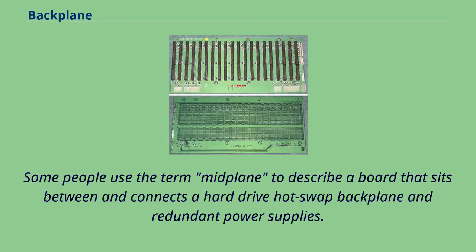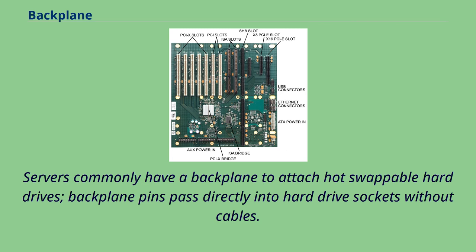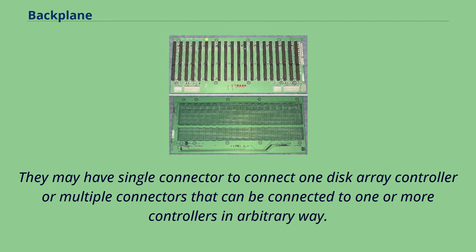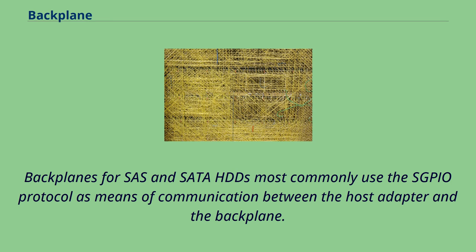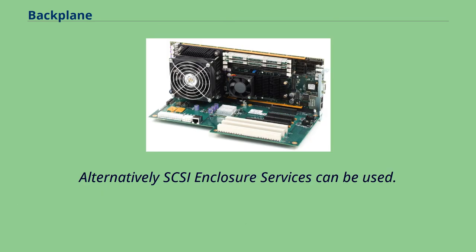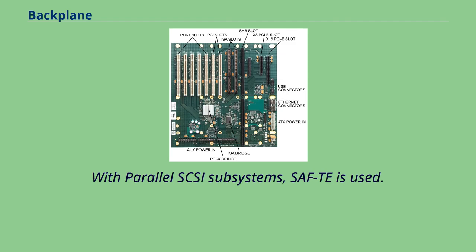Some people use the term midplane to describe a board that sits between and connects a hard drive hot-swap backplane and redundant power supplies. Servers commonly have a backplane to attach hot-swappable hard drives; backplane pins pass directly into hard drive sockets without cables. They may have a single connector to connect one disk array controller, or multiple connectors that can be connected to one or more controllers in an arbitrary way. Backplanes are commonly found in disk enclosures, disk arrays, and servers. Backplanes for SAS and SATA HDDs most commonly use the SES/SGPIO protocol as a means of communication between the host adapter and the backplane. Alternatively, SCSI enclosure services can be used.